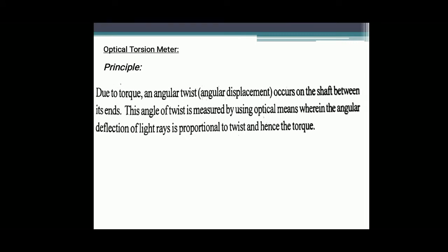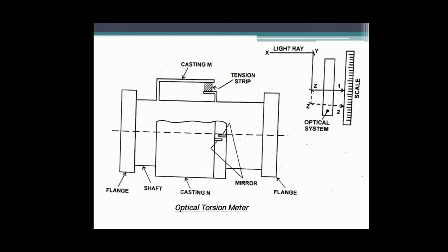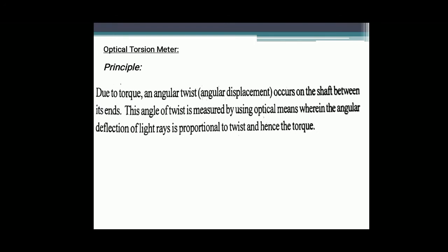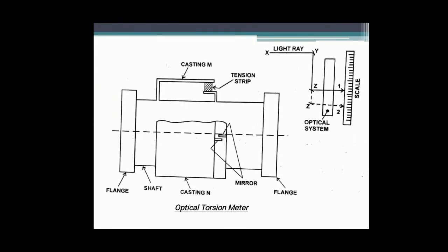Next is the Optical Torsion Meter. The principle is: due to torque, an angle of twist occurs on the shaft between its ends. This angle of twist is measured by using optical means, wherein the angular deflection of a light trace is proportional to the twist and hence the torque. The components include: a shaft on which two castings M and N are connected at a known distance; a tension strip linking the two castings; two mirrors fitted and aligned on the castings; a light beam falling on the mirrors; an optical system; and a torque calibrated scale.